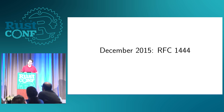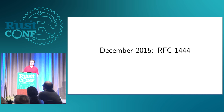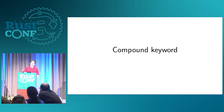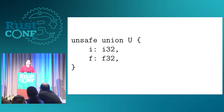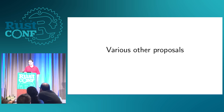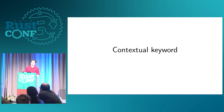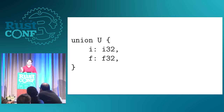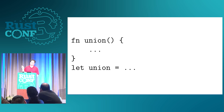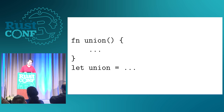That produced a bunch of additional discussion, new proposals, new variations on a theme. Somebody said we could use a compound keyword where any given piece of it wasn't a keyword, like 'unsafe union', but you could still use union for other things. The one that ended up gathering the most attention was Niko's idea of a contextual keyword — something that's a keyword in the right context, but not reserved for other places. That would let us actually write what we really want to write, which is just 'union', and you can also use union for other things and it doesn't break. So that's what we ended up going with.